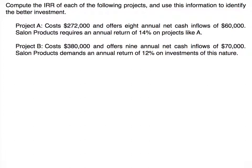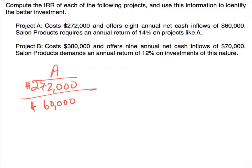Here we have two projects, and we're going to calculate the IRR for each one and identify which is the better investment. Project A costs $272,000 and offers eight annual net cash inflows of $60,000. Salon Products requires an annual return of 14% on projects like A. The first thing we want to do is calculate the annuity present value factor: $272,000 divided by $60,000 annual net cash inflow gives us a factor of 4.533.